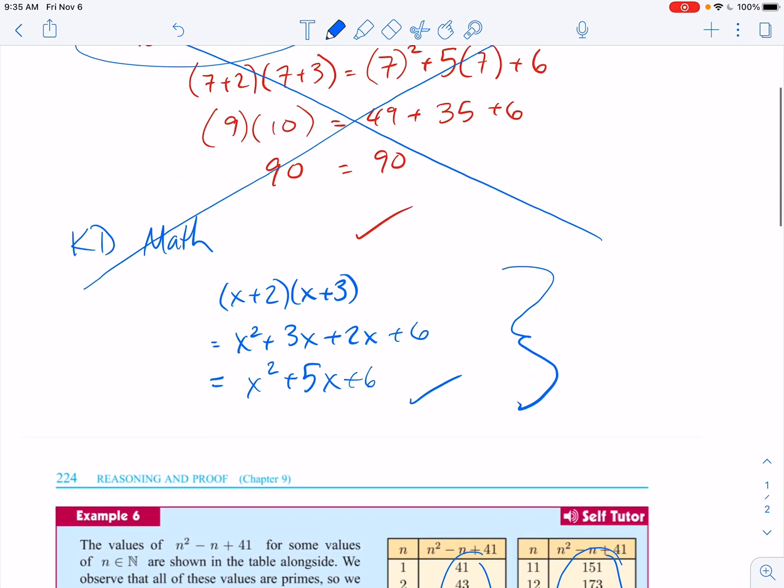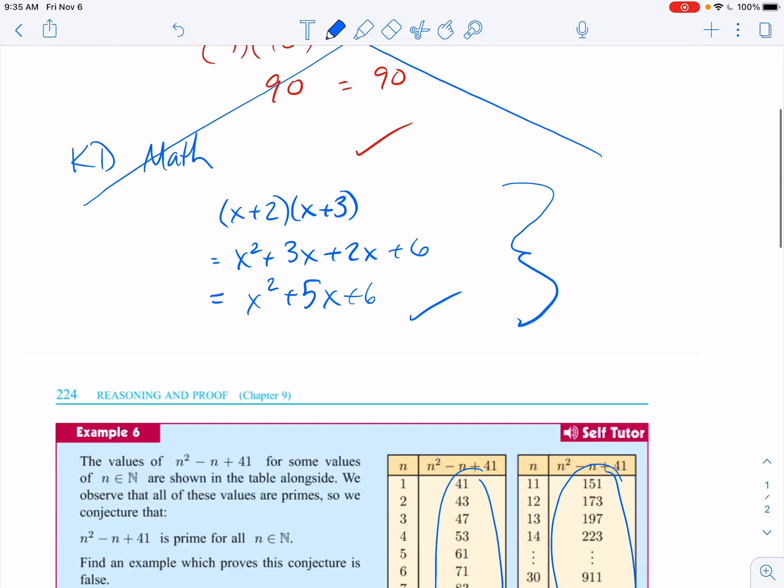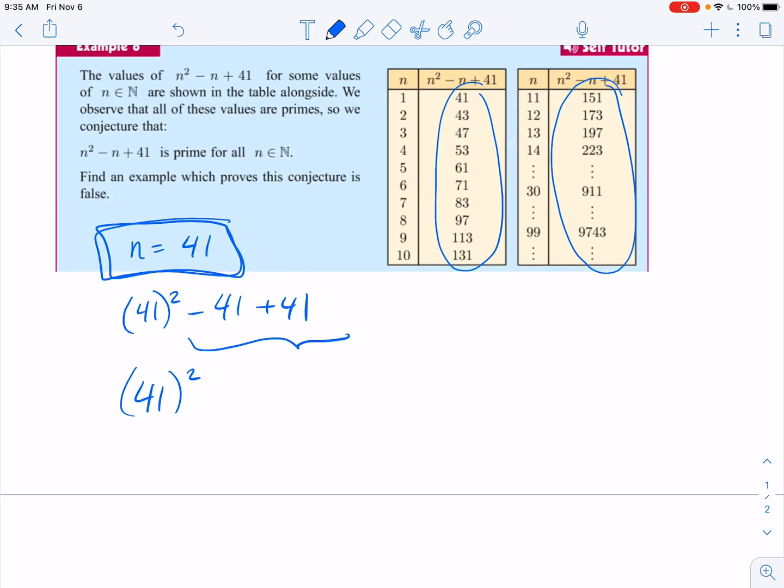So you can't do that for a proof. You can't prove just one scenario and expect that to be true for all situations. But you can disprove something with just one example. All right, go practice.